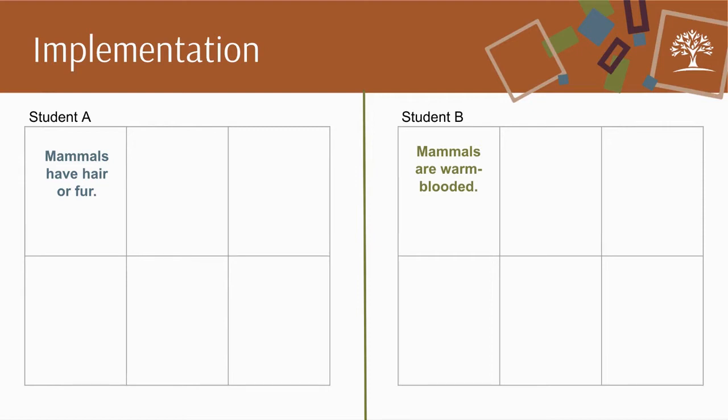Students then get with a partner, where Student A reads the piece of information they wrote. This is where Student A is giving one to a partner — they offer their partner a piece of new information or learning that isn't already on their peer's paper.